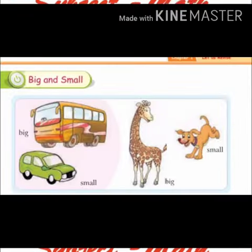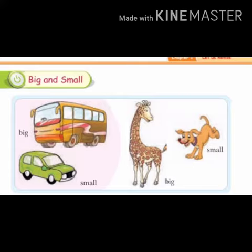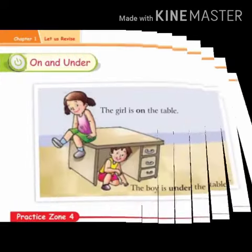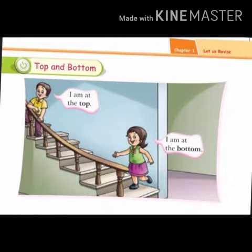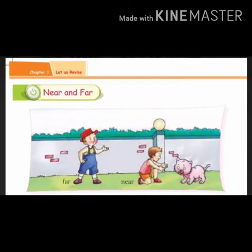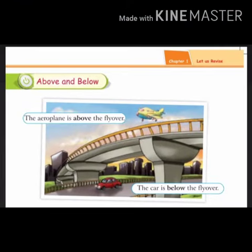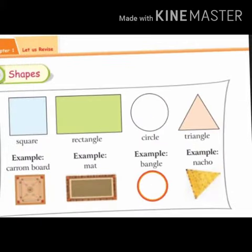Chapter 1. I have already taught you about big and small, on and under, top and bottom, near and far, above and below, shapes — square, rectangle, circle, triangle — and their examples.